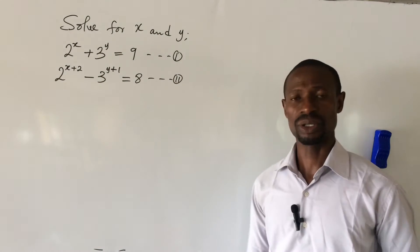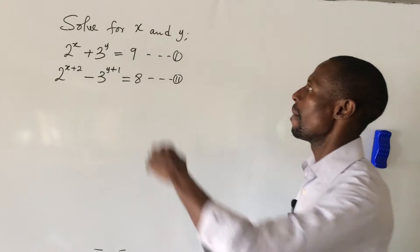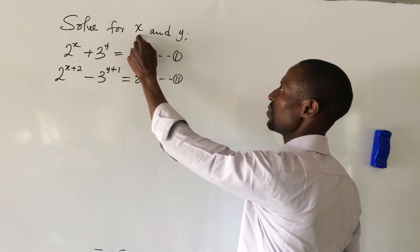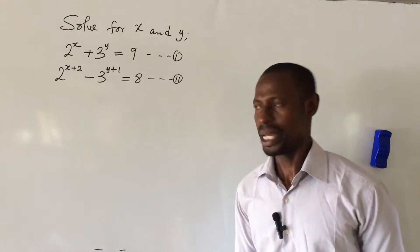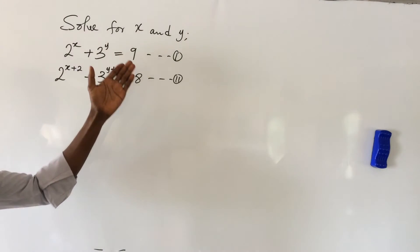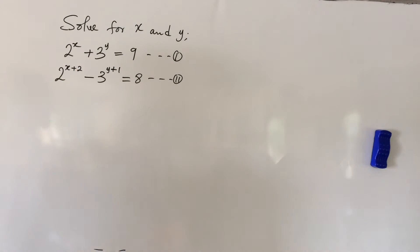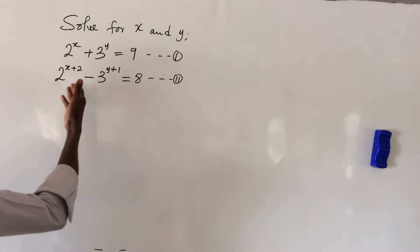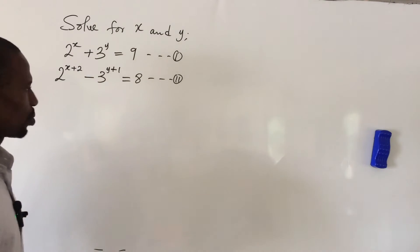If you look at these two equations, they are automatically a simultaneous equation because we are solving for x and y concurrently. Now if you look at equation one, equation one does not have much problem. Equation two has a little challenge — we have to convert equation two to another format before we can solve.